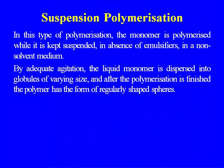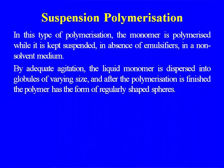In emulsion polymerization, liquid or liquefied monomers are brought into an emulsified state and the reaction proceeds very rapidly. The average molecular weight of the polymer is higher than in bulk or solution polymerization. The polymer produced by emulsion polymerization may not be suitable for optical clarity and excellent electrical insulation. In suspension polymerization, the monomer is polymerized while kept in suspension — suspended in the absence of emulsifier in a non-solvent media. By adequate agitation, the liquid monomer is dispersed into globules of varying size and after polymerization is finished, the polymer has the form of regularly shaped spheres.